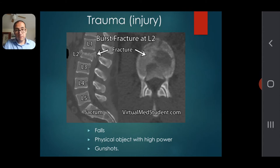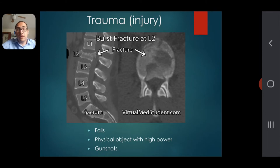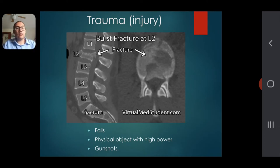Other things that can compromise the lumbar bones include high falls — we're talking three to four stories for a healthy person, though a simpler fall could be more serious for someone with an existing condition. A physical object with high force, like a car crash, can also lead to lumbar damage. These are very extreme situations because the lumbar bones are very difficult to actually damage, but this is how it can happen.